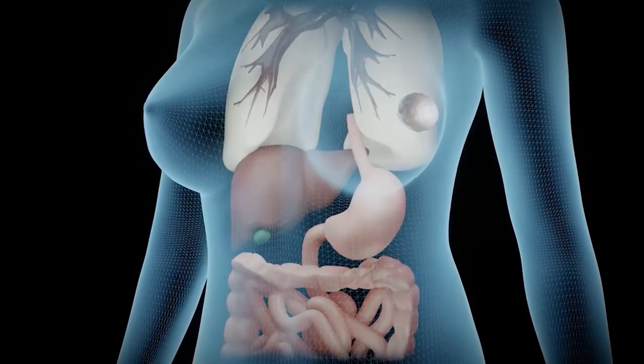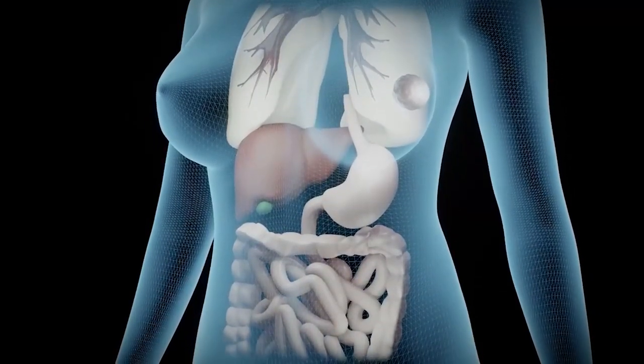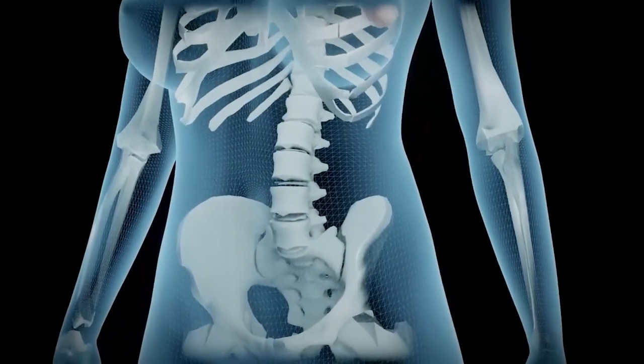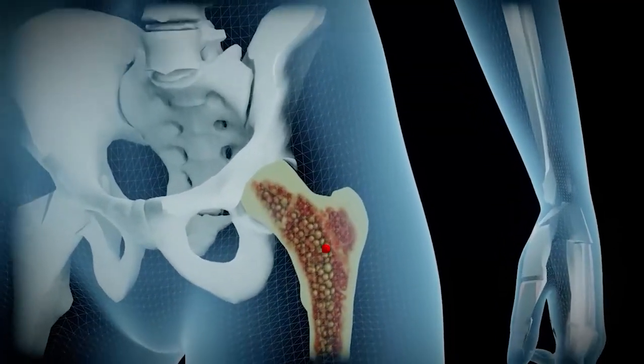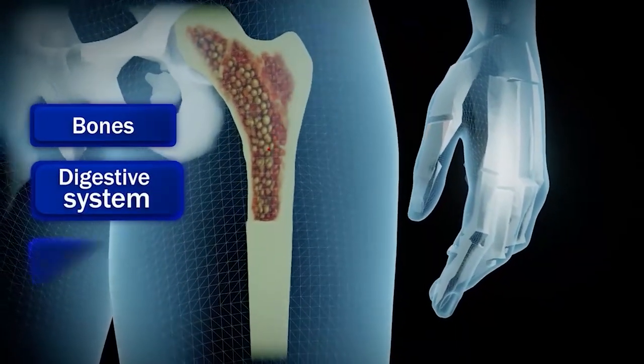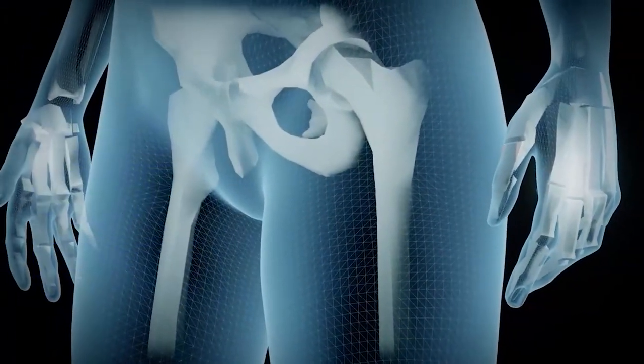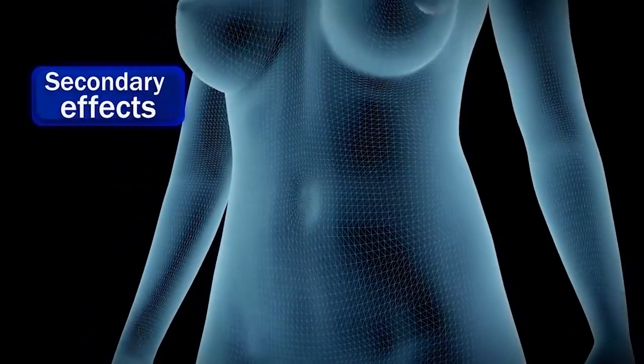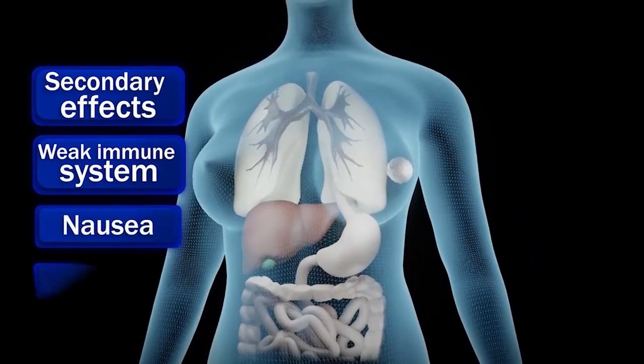Unfortunately, the drugs used in chemotherapy can't tell the difference between fast-growing normal cells and cancer cells. As a result, these drugs also damage or irritate some of the fast-growing normal cells, such as those in the bone marrow, digestive system, and hair follicles. This damage produces side effects such as a weak immune system, nausea, and hair loss.